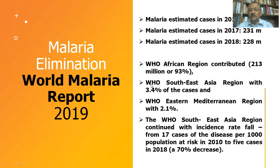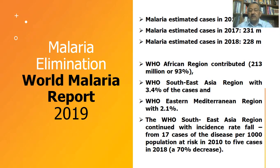A good note is that the WHO Southeast Asia region continued to show a declining incidence rate. Cases recorded were 17 per thousand population in 2010, and by 2018 it is only 5 per thousand — showing a 70 percent decline.